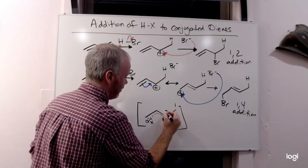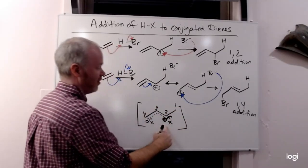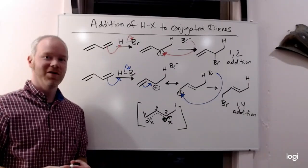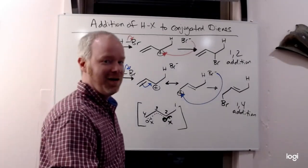So two potential places for the nucleophile to add there. You can add on the second carbon, giving us the 1,2-product, or the fourth carbon, giving us the 1,4-product. We'll talk about that a little bit more in another video.